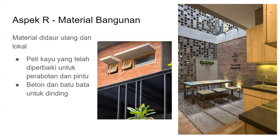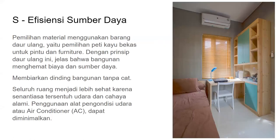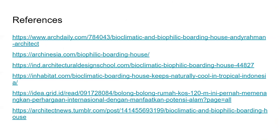Untuk material bangunan: peti kayu yang telah diperbaiki untuk perabotan dan pintu, jadi untuk meja-meja di area komunal menggunakan bahan-bahan recycle. Untuk aspek S, yaitu efisiensi sumber daya: ada penggunaan material yang menggunakan bahan daur ulang, membiarkan dinding bangunan tanpa cat, seluruh ruangan menjadi lebih sehat karena tersentuh dengan udara dan cahaya alami, sehingga penggunaan AC dapat diminimalkan. Berikut referensi yang kami gunakan, ada beberapa link namun belum dibuat secara APA style. Sekian dari kelompok 2, terima kasih.